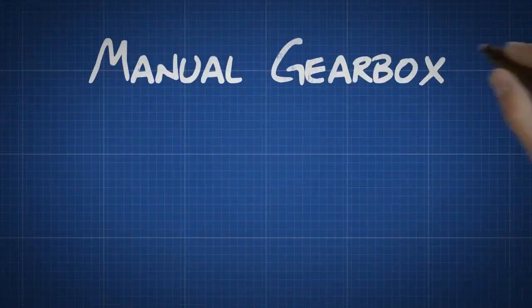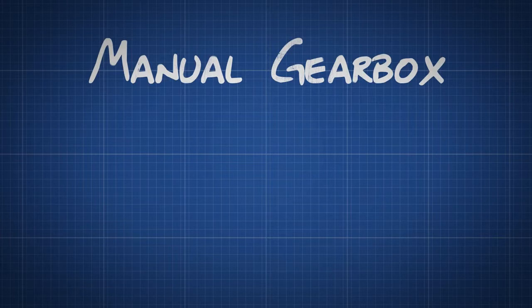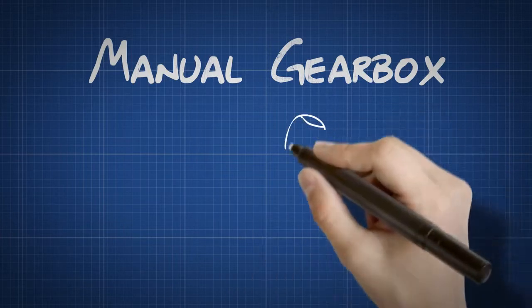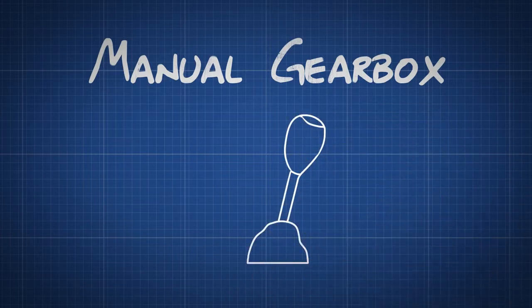How a manual gearbox works. In simple terms, a manual gearbox or manual transmission on a car is a set of gears that are selected by moving a gear stick.